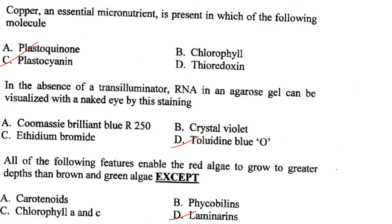This is Part B of the questions. Copper, an essential nutrient, is present in plastocyanin. Answer is option C.